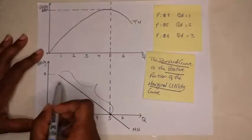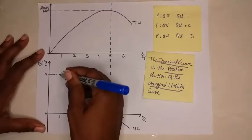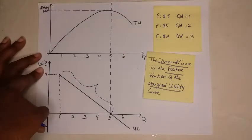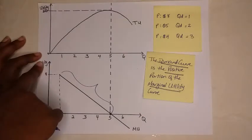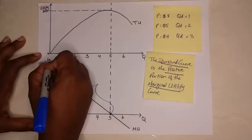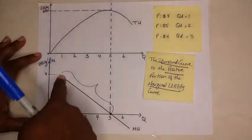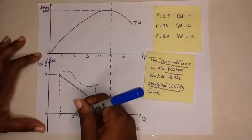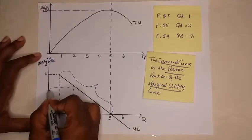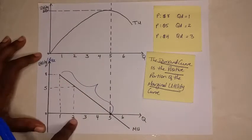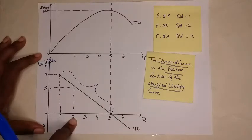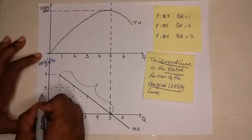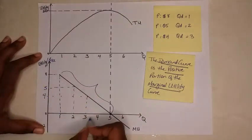So I could say, for example, 8 utils, in which case we are assuming, remember, the assumption that MU is equal to price. So you can now change utils to price. So at 8 utils, so price of $8, our QD would be 1. At a price of $5, our QD is 2. And at a price of $4, our QD is 3.